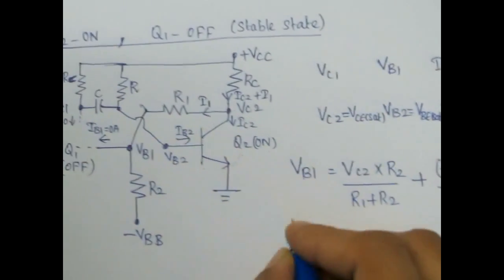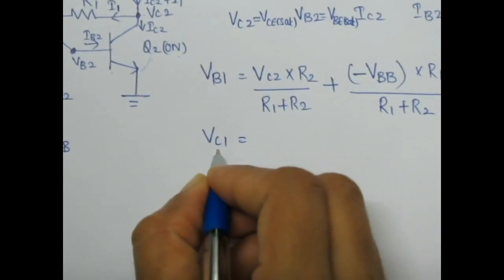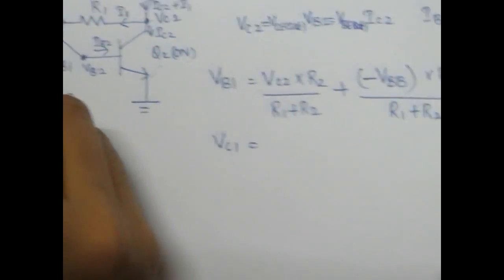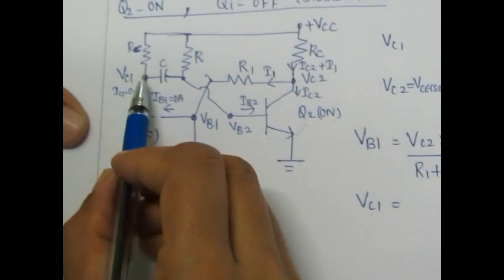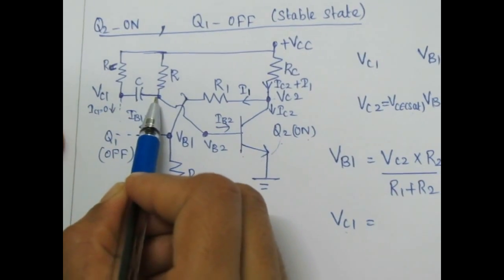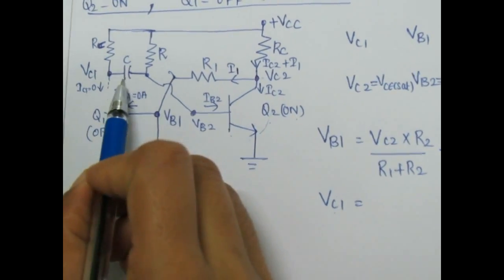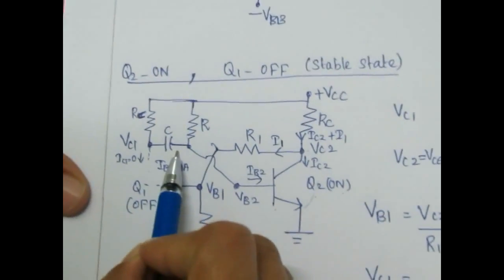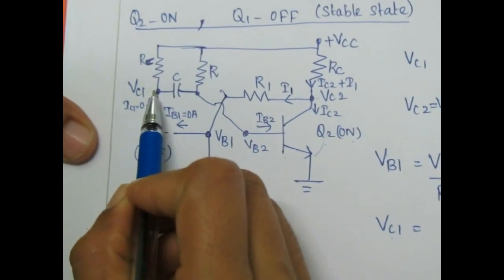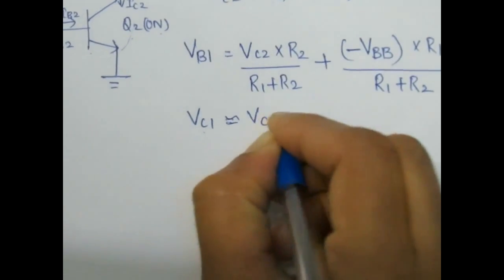VC1 is the collector voltage across Q1 transistor. One end of VC1 is connected to the capacitor. In stable state, the capacitor will hold a fixed amount of voltage, and VC1 is approximately equal to VCC.